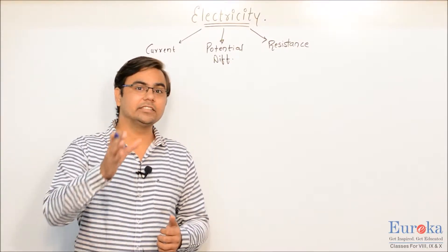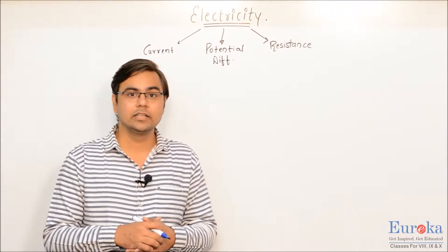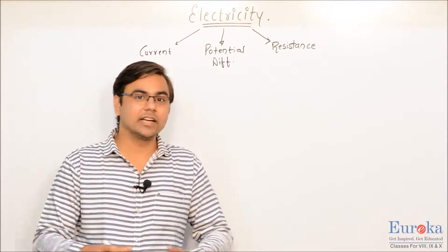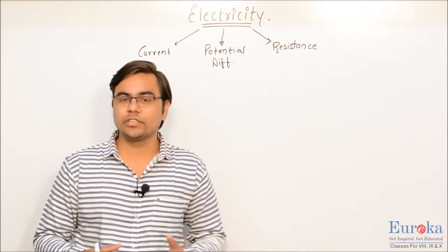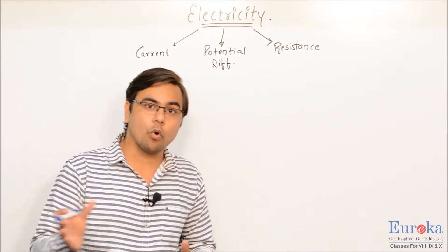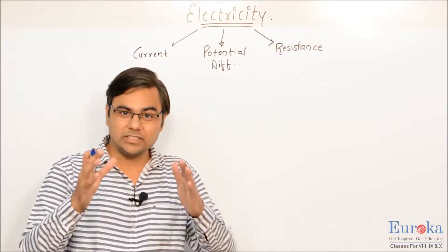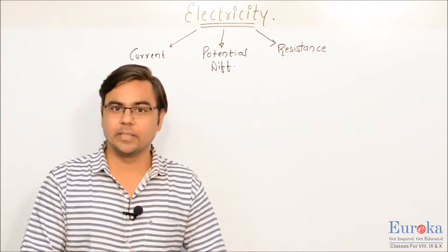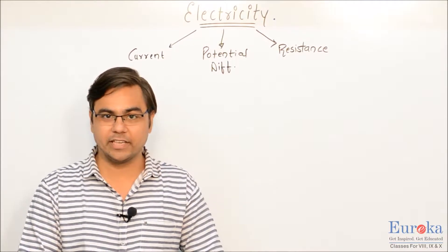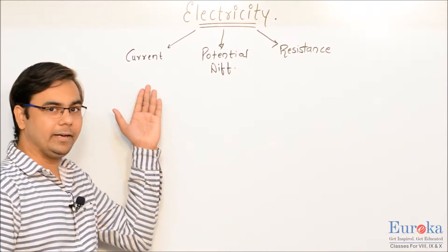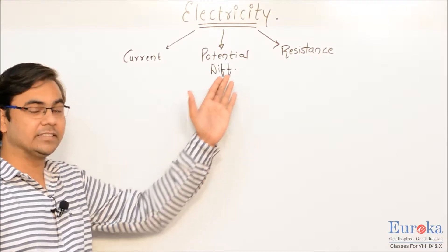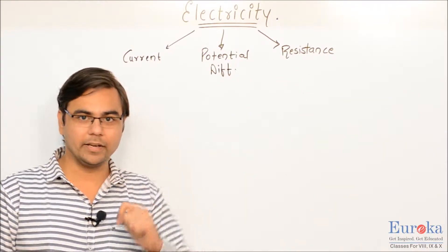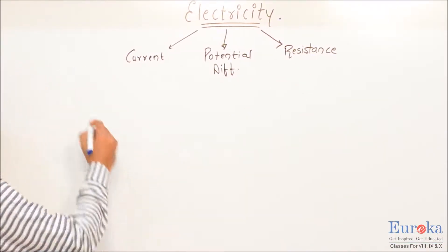Now if electricity is a form of energy, how can we obtain it? There are several such questions which we are going to answer in the course of this video. The first thing we need to understand are the three main concepts related to electricity: the concept of current, the concept of potential difference, and the concept of resistance. We will begin with the concept of current.